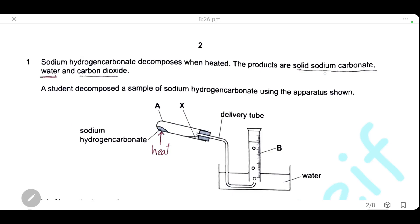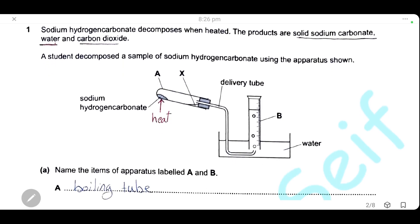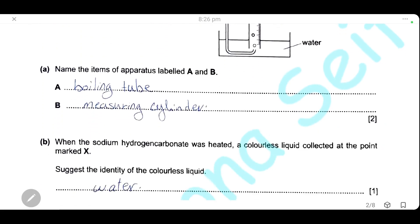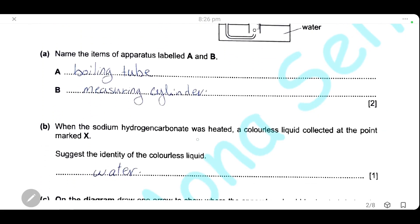The products are solid sodium carbonate, water, and carbon dioxide. From the diagram of the experiment, name the parts labeled A and B. A is a boiling tube, used for heating and decomposing sodium hydrogen carbonate, and B is a measuring cylinder, used for collecting carbon dioxide gas by downward displacement of water.